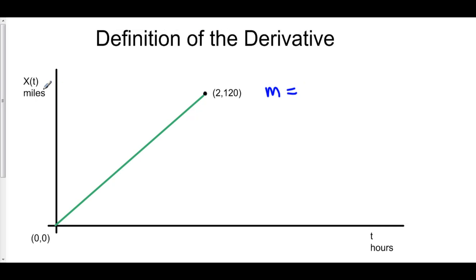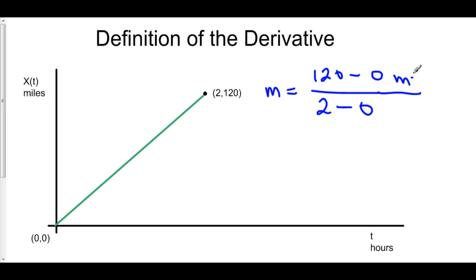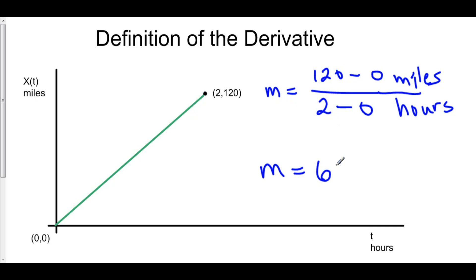Slope is equal to my rise, which is 120 minus 0, over my run, which is 2 minus 0. Keep in mind that the unit of my rise is in terms of miles, and the unit of my run is in terms of hours. So when I find the slope between two of my positions, I'm now in miles per hour. The slope of this line, 120 over 2, is 60 miles per hour. Over those two hours, I averaged a rate of change of 60 miles per hour.